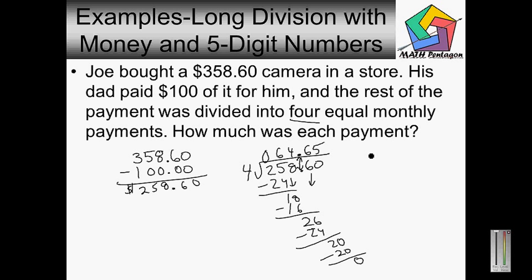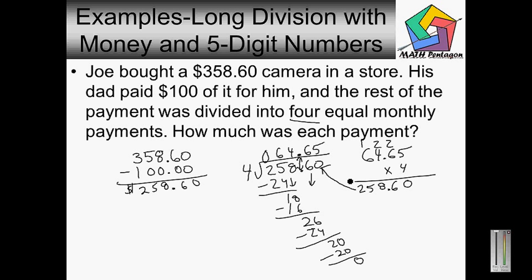Now I can check that by doing sixty-four dollars and sixty-five cents times four. Five times four is twenty — carry the two. Six times four is twenty-four, plus the two is going to give me twenty-six — carry the two. Four times four is sixteen, plus the two is going to give me eighteen — carry the one. Six times four is twenty-four, plus the one is going to give me twenty-five. Line up the decimal point, and you can see I get the same result. So the final answer is sixty-four dollars and sixty-five cents — that's how much each monthly payment would be for the four months.